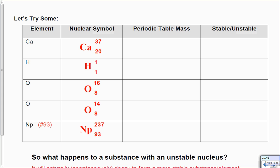Element calcium, nuclear symbol: I have a total mass of 37 with 20 protons. The periodic table mass, we have to look this up on the periodic table. The mass of calcium in the periodic table is 40, so is it stable or unstable? It is unstable because it's different.